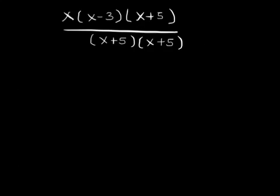The given rational expression is therefore now written in the factored form as x times x minus 3 times x plus 5 divided by x plus 5 times x plus 5. We now divide the common factors between the numerator and the denominator.